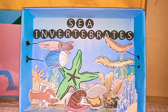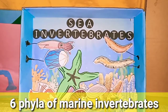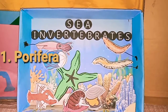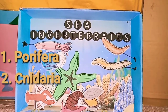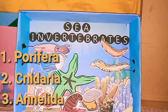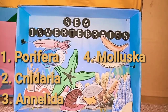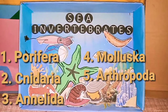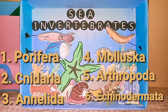Now we will focus on marine invertebrates. There are six phyla, or groups of invertebrates, that are commonly found in the oceans. These are: first, Porifera or the sponges; second, Cnidaria or the corals, jellyfish, and sea anemones; third, Annelida or the segmented worms; fourth, Mollusca or the snails, clams, and mussels; fifth, Arthropoda or the crabs, shrimp, barnacles, and copepods; and sixth, Echinodermata or the sea stars.